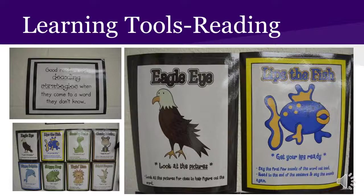First grade readers may gain clues about the printed words on a page by looking at the pictures — we call this using our eagle eyes. First grade readers may also decode words by getting their lips ready to make the sounds — we call this using our fish lips. You can see from the bottom left picture there are a lot of strategies to figuring out the words on a page. Think about reading an especially difficult text as an adult — a law book, a medical text, or a legal document. Do you use any of these strategies?